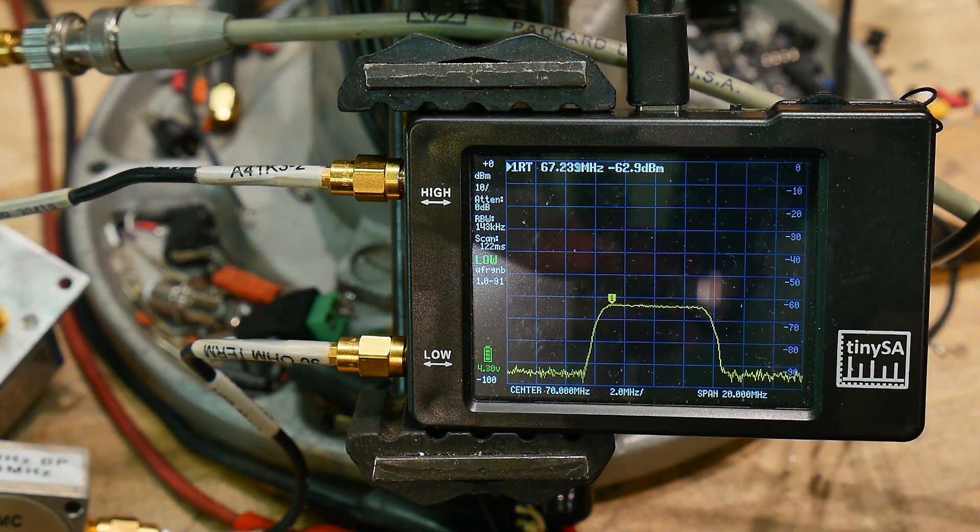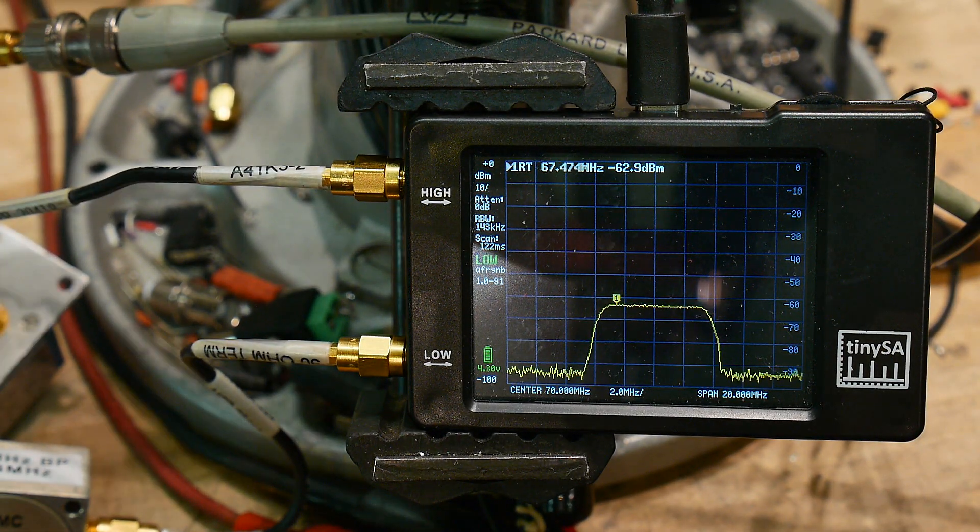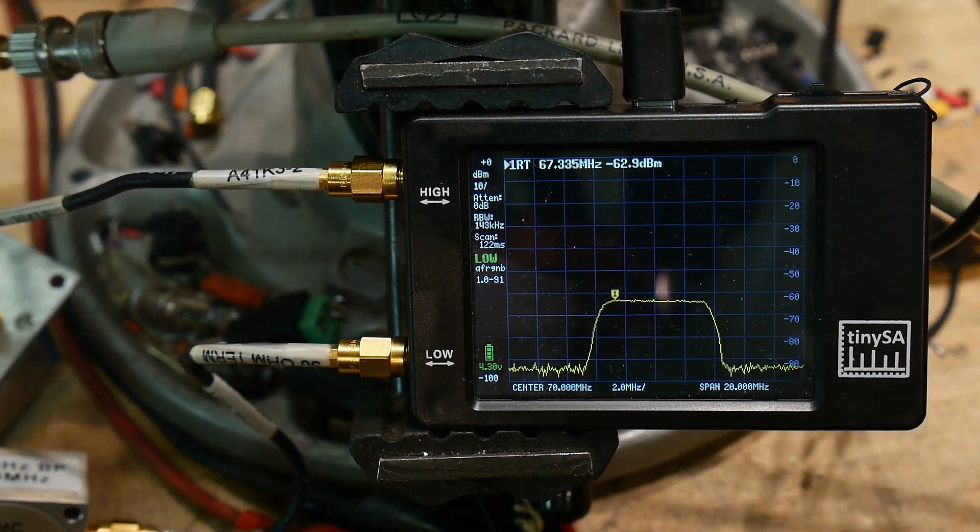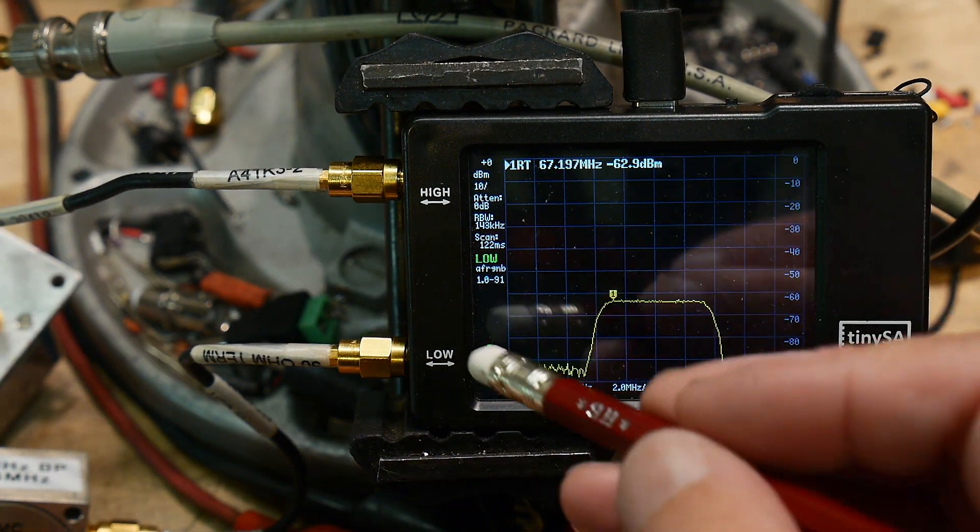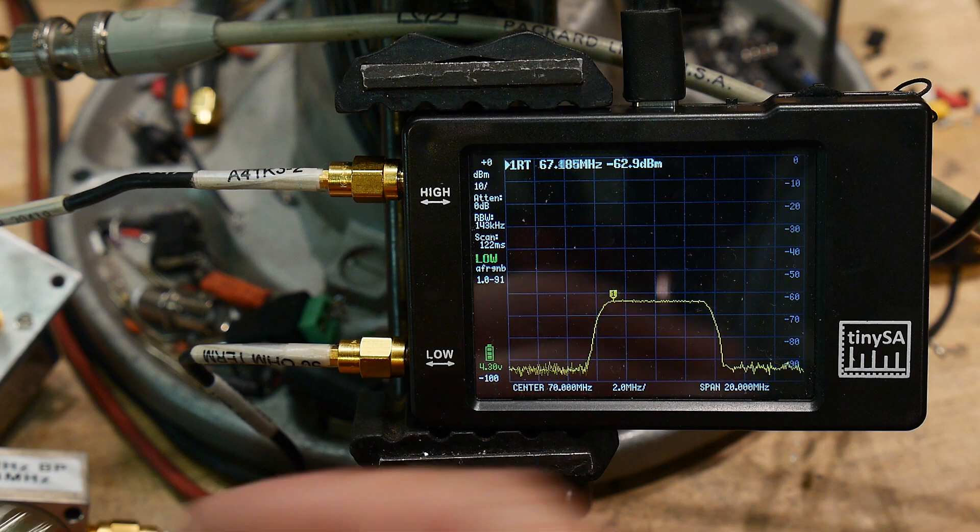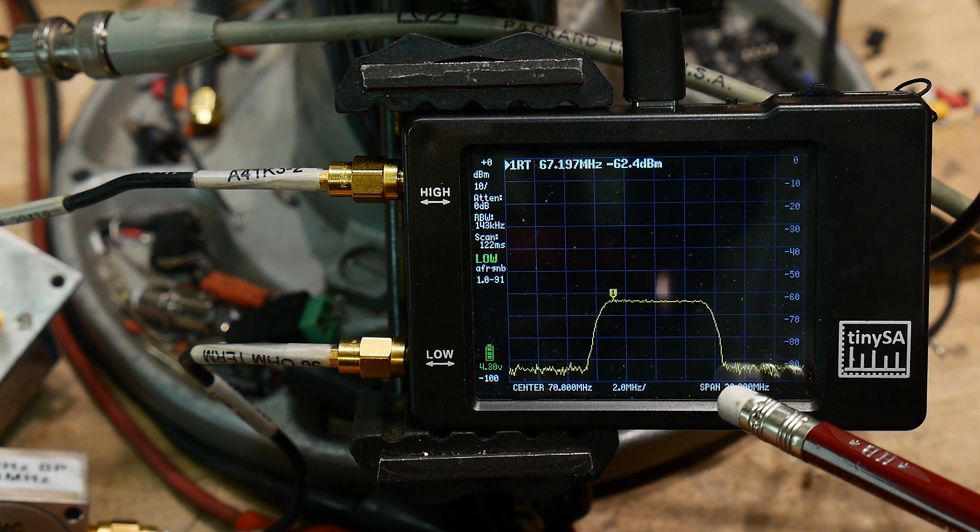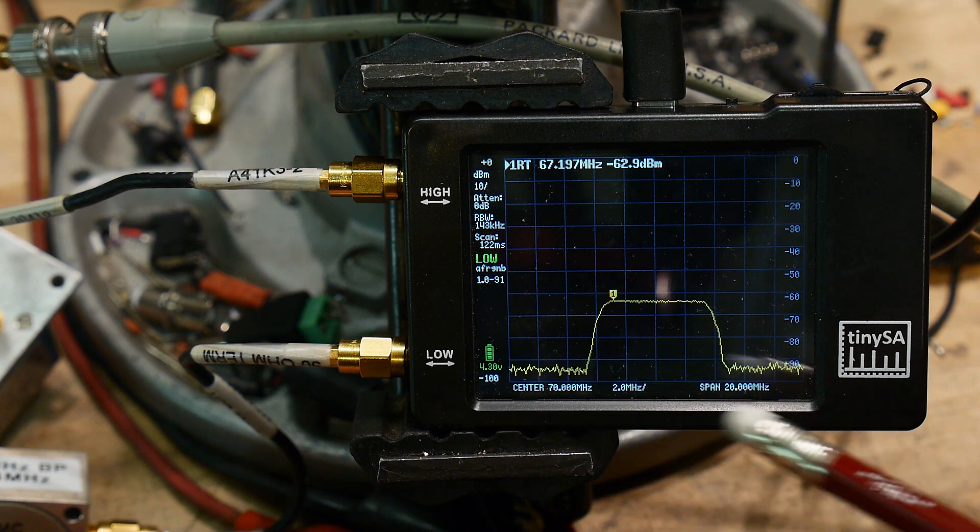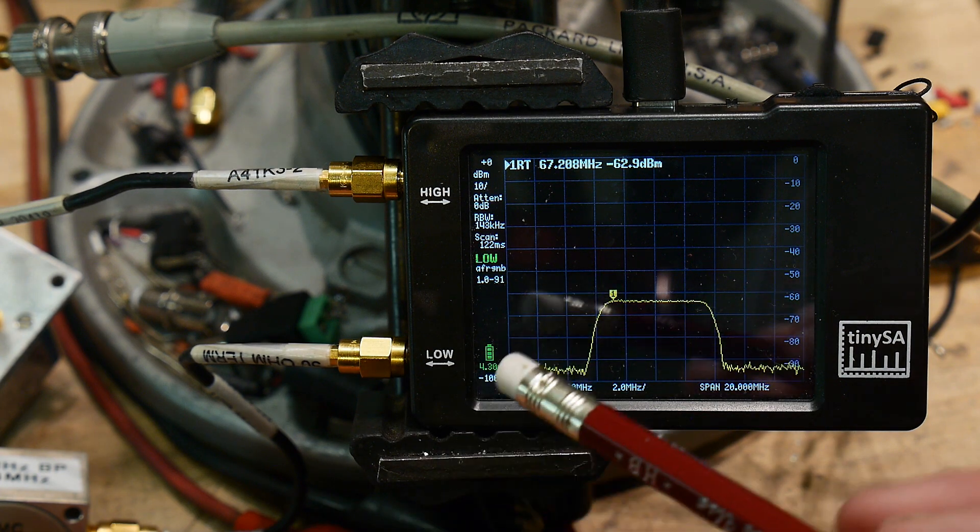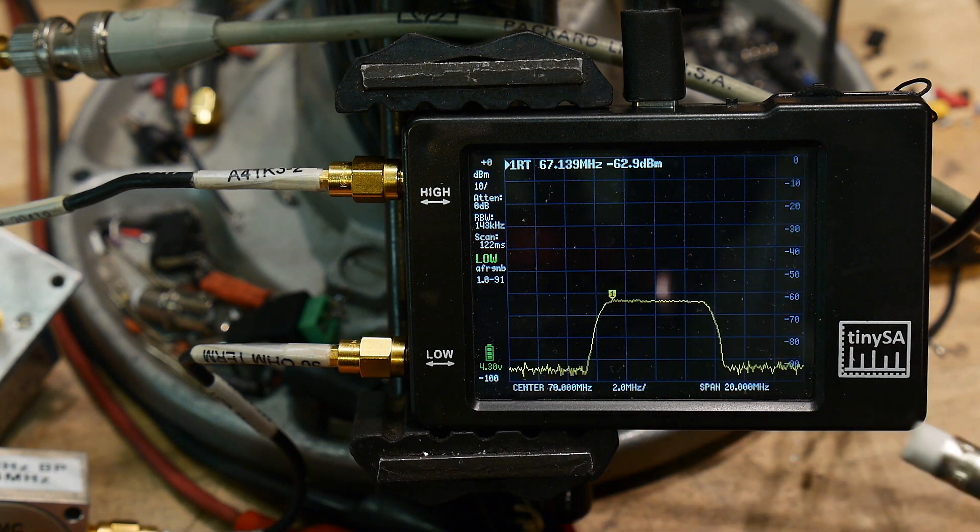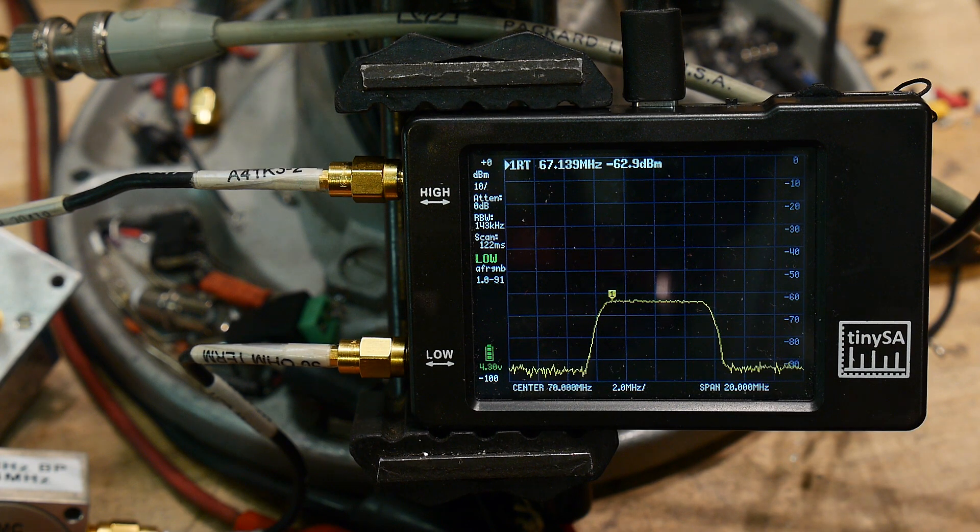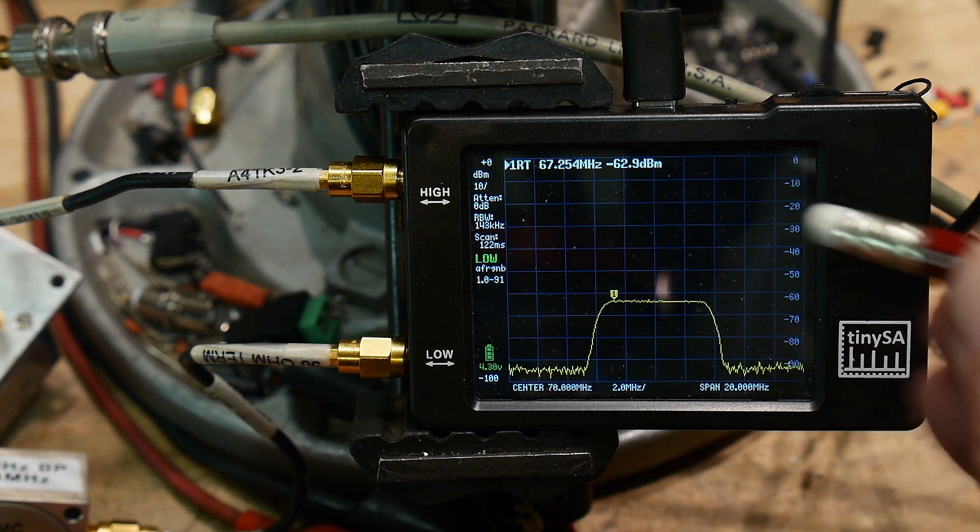So here we go. We are sweeping. There's still a little bit of glare. There we go. So we're sweeping a 70 megahertz filter. We're centered at 70 megahertz and we're spanning 20 megahertz. It's a plus or minus 4 megahertz filter and it all seems to be working well and I haven't done anything.